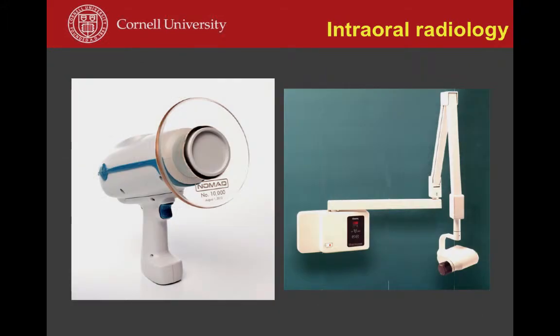The biggest part of the equipment is the generator. There are wall-mounted, floor-mounted, and portable handheld options. The Nomad handheld unit has FDA approval and is safe to use with proper safety measures — very practical and easy to use. You can carry it between rooms, buildings, or facilities. The cost of the latest generation Nomad is around $8,000.